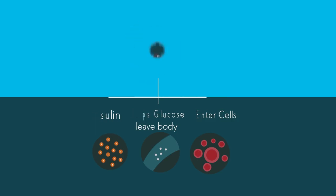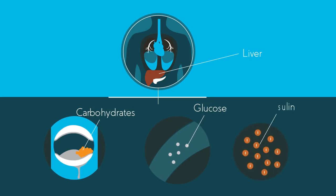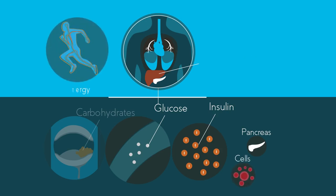Your body digests carbohydrates, breaking it down into glucose. Your liver also produces glucose. Insulin is a hormone produced by the pancreas that allows glucose to enter into our body's cells. Here it is used to provide energy to undergo our normal life processes, like growth and repair.